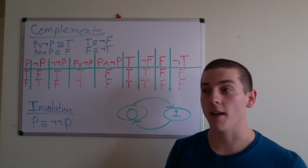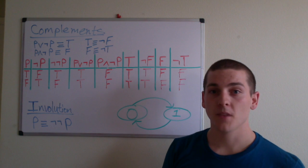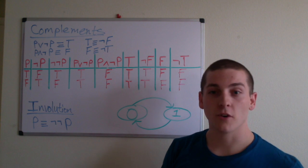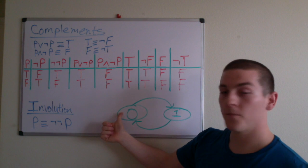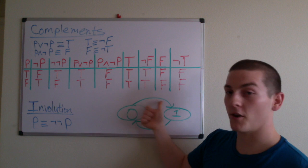So the law of involution tells us that if we have a proposition and we feed it through a function twice, we'll end up in the same spot. So if we have a proposition P starting at state 0, feed it through a function, the negation function, it'll bring us to state 1 as not P.